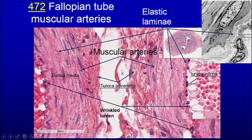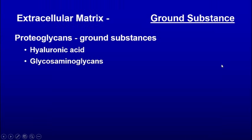In muscular arteries, here we see elastic fibers again. Elastic fibers help with recoil, and here in a blood vessel at the electron microscopic level we can see the elastic fiber.